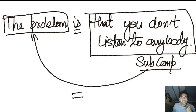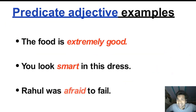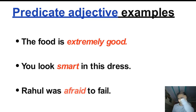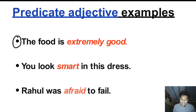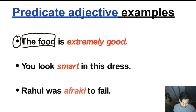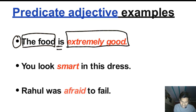So a subject complement as a predicate nominative can be just one word, a phrase, or a noun clause. Now, predicate adjective examples — when you want to modify the subject and give information about it using adjectives, you will use predicate adjectives. Example one: 'The food is extremely good.' The subject is 'food,' 'is' is the linking verb, and 'extremely good' is the subject complement — an adjective phrase giving information about the subject. Food equals extremely good.